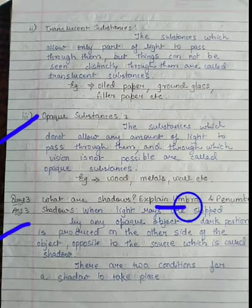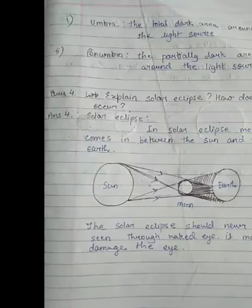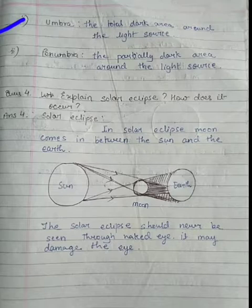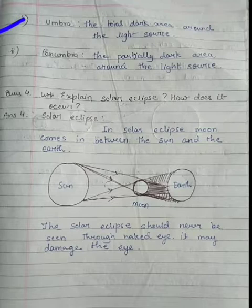There are two conditions for a shadow to take place. Here we will see umbra and penumbra. First is umbra, which is the total dark area around the light source. And the second is penumbra, which is the partially dark area around the light source.